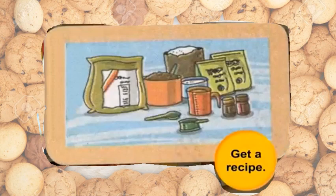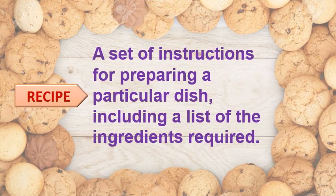First, before the preparation, we have to get a recipe. We are going to prepare biscuits, so we need the recipe. What is the meaning of recipe? A recipe means a set of instructions for preparing a particular dish, including a list of the ingredients required. The different steps are written in the recipe, along with the ingredients.